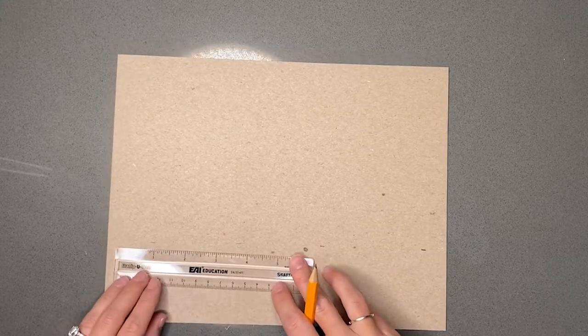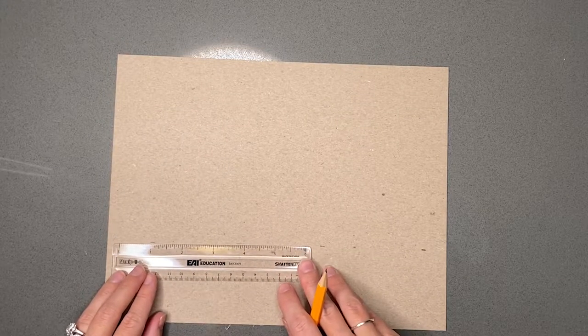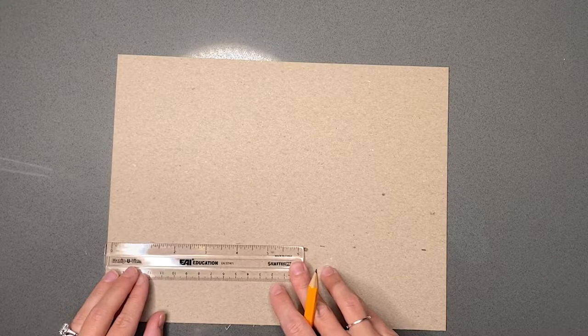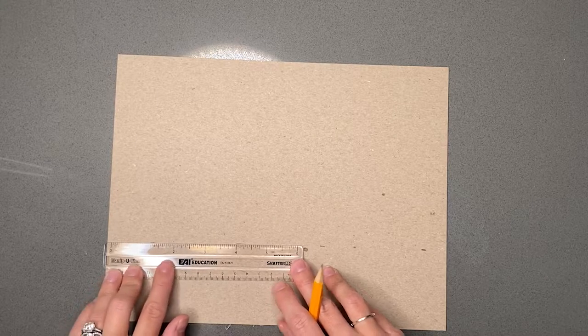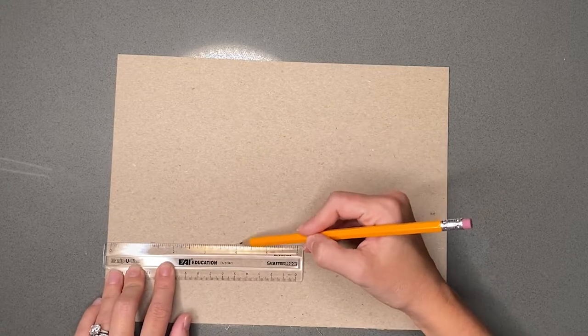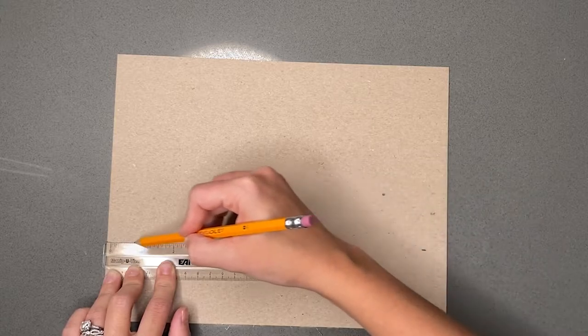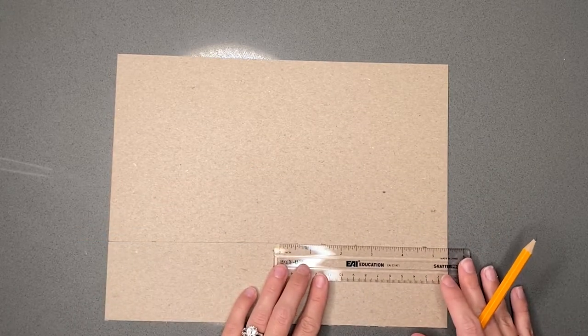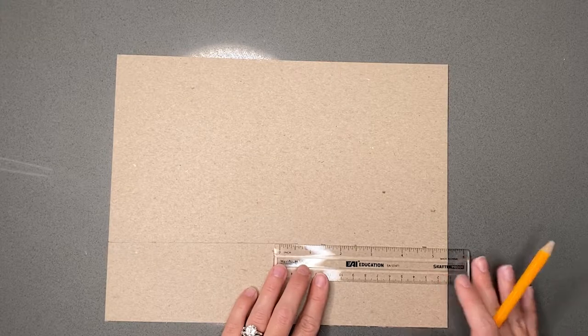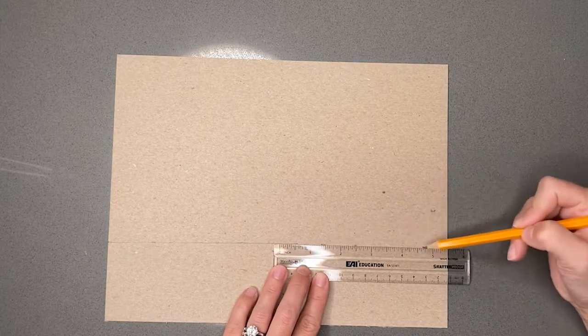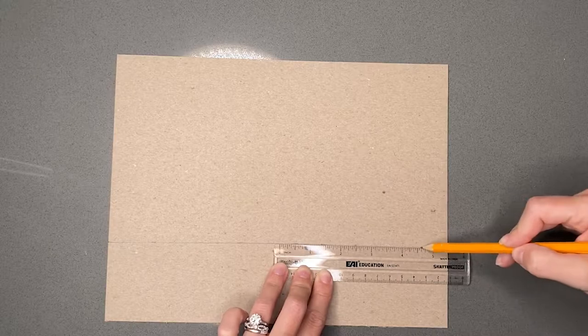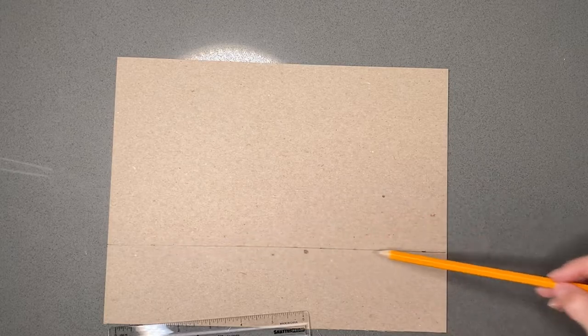Next, I'm going to take my ruler and I'm going to connect my dashes. I'm going to line this up. I have a dash here and a dash here and I'm going to start from the edge of my paper and go as far as I can on the ruler and then I'm going to continue this line. So here we end up with a straight line that's parallel to the top of our sheet, six inches down.